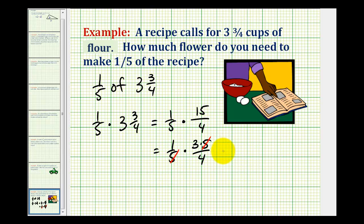And now when we multiply the numerator, we have one times three, that's three. Our denominator is four, which means that the recipe calls for three and three-fourths cups of flour, and we only want one-fifth of the recipe. We need three-fourths of a cup of flour.